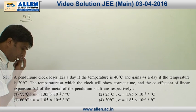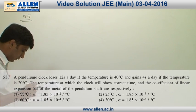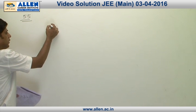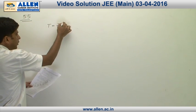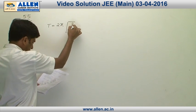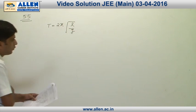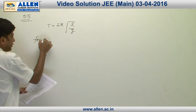Question number 55: We are asked about the value of alpha and the original temperature. As we know, the formula of time period of a simple pendulum is T equals to 2π√(l/g).